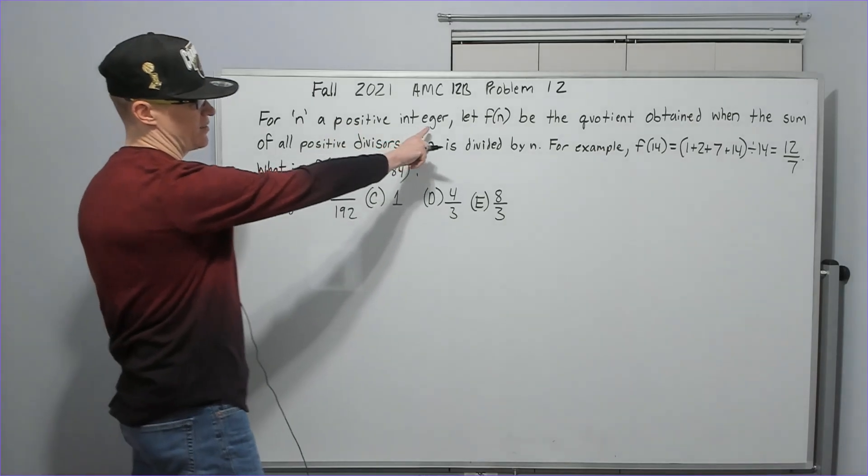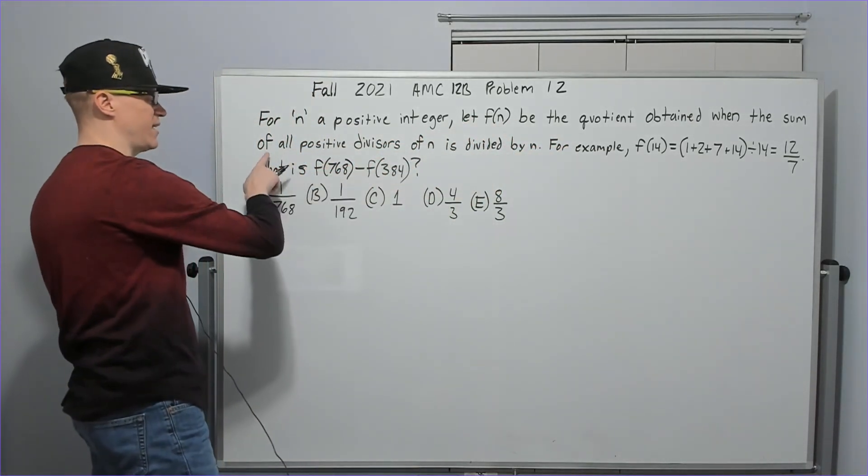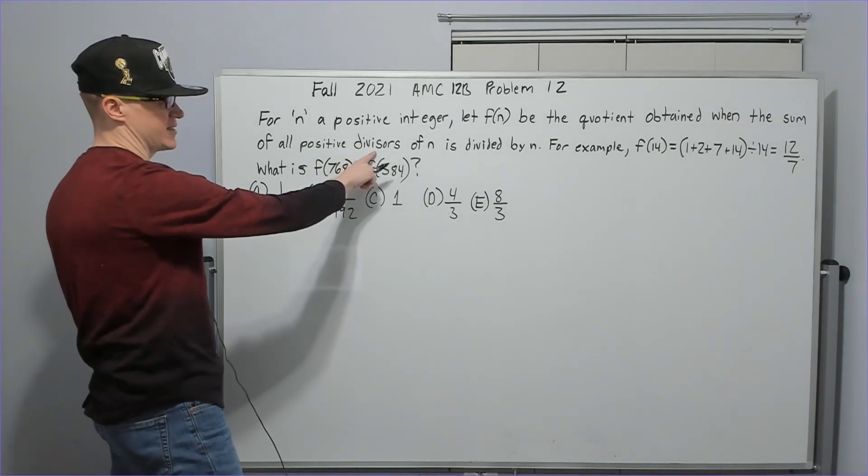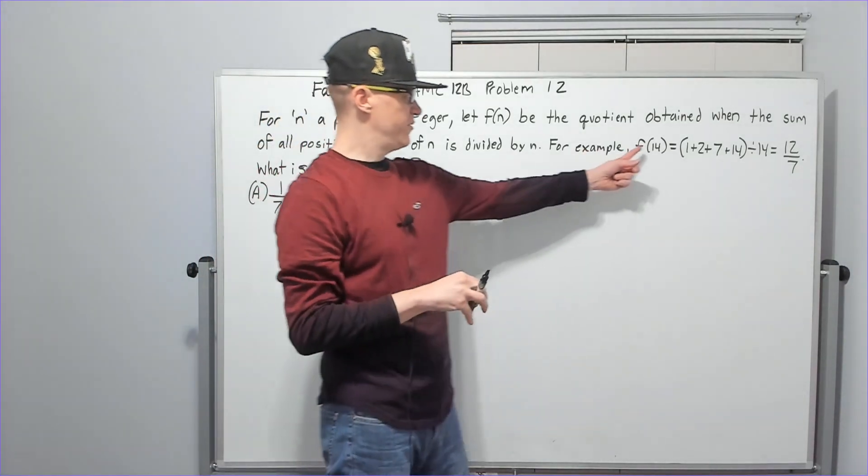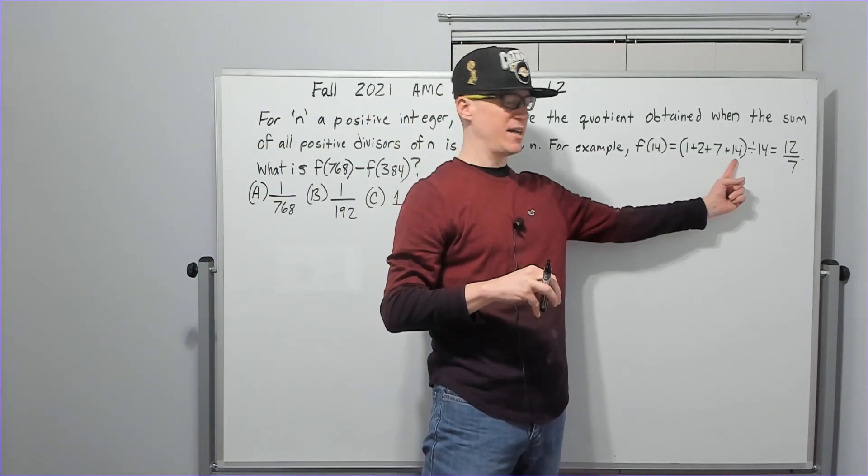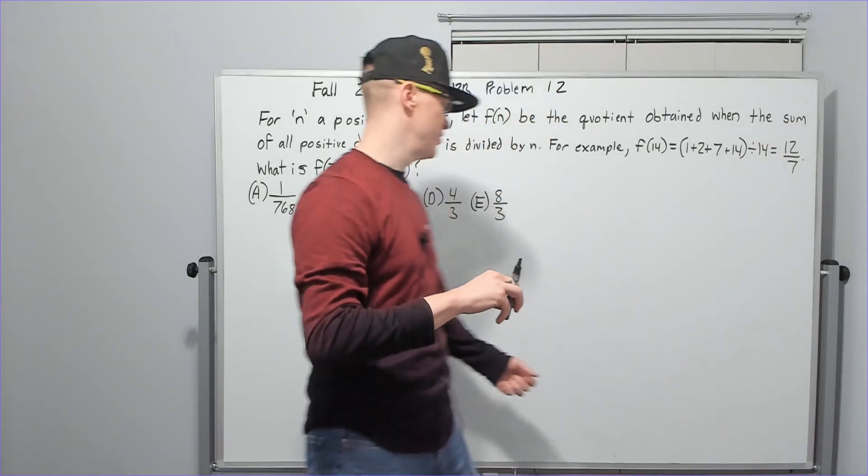For n a positive integer, let f(n) be the quotient obtained when the sum of all positive divisors of n is divided by n. For example, f(14), the sum of all divisors of 14 divided by 14 itself, gives 12/7.